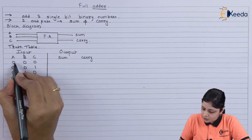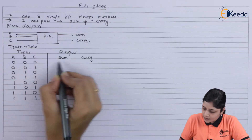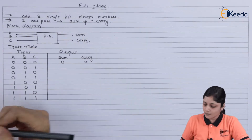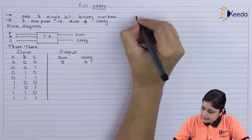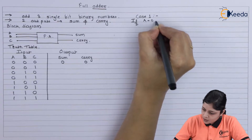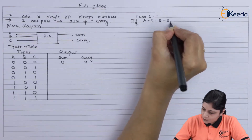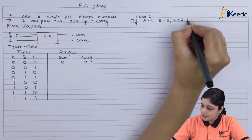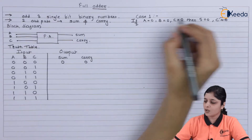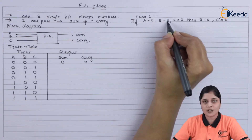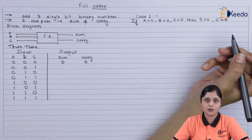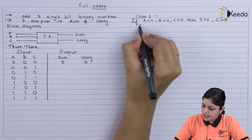Case 1: if A equals 0, B equals 0, and C equals 0, then S equals 0 and carry equals 0. Because 0 plus 0 is 0, and again 0 added to 0 gives a final answer of 0.